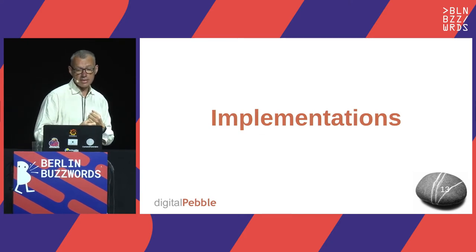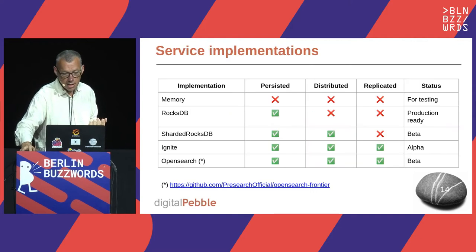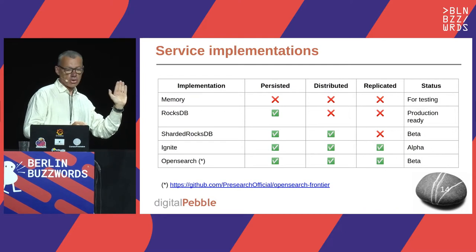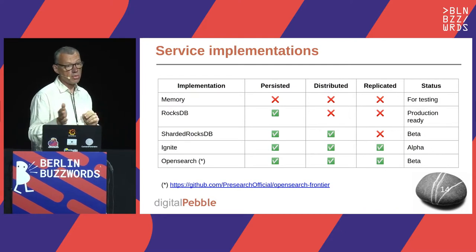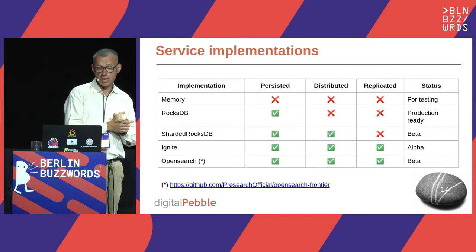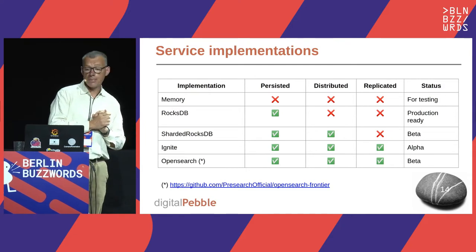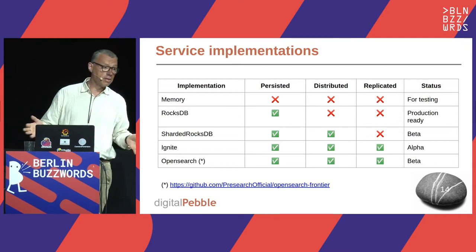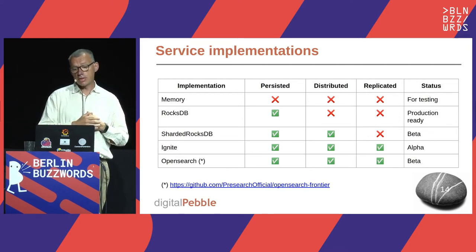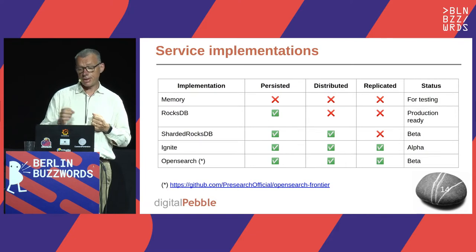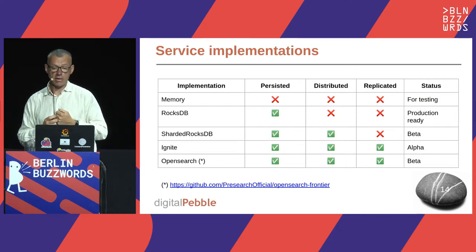Now for the implementations. The first two were done during the first phase of the project last year. The in-memory one is just for testing — not scalable. The main result of the first phase was an implementation based on RocksDB, which is persisted, so if you turn the frontier off and back on it hasn't lost anything. It's not distributed or replicated, but it's pretty solid and has been used quite heavily with good results.